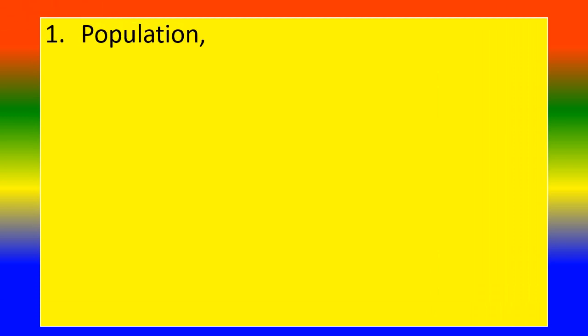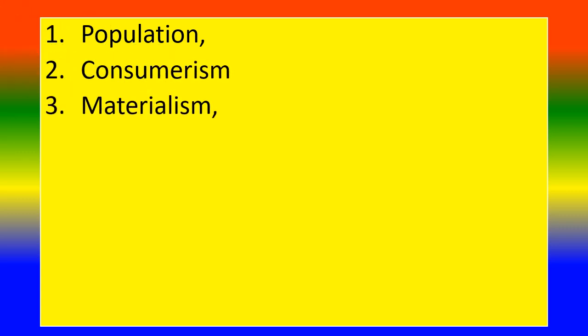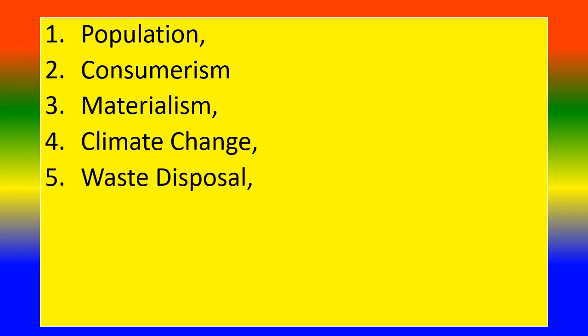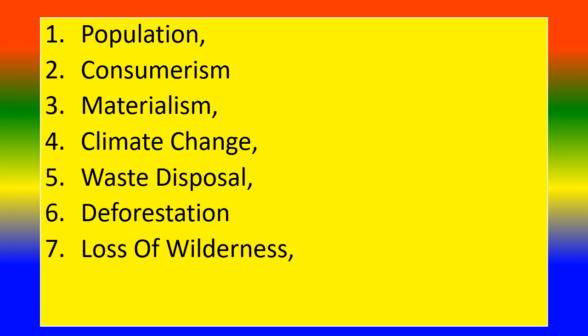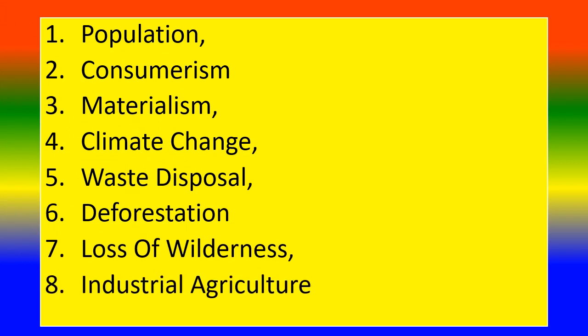First challenge: population, mainly overpopulation. Second: consumerism. Three: materialism. Four: climate change. Five: waste disposal. Six: deforestation. Seven: loss of wilderness. Eight: industrial agriculture.